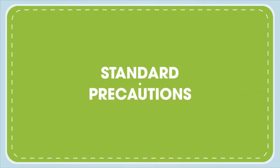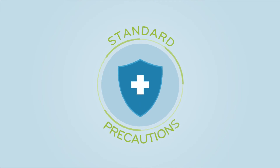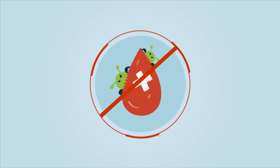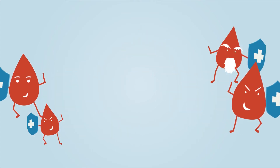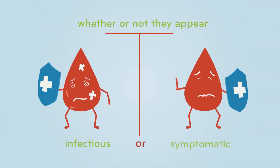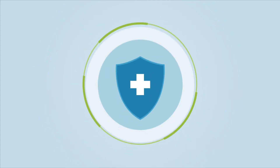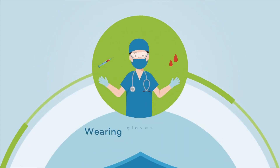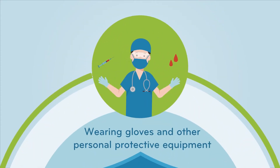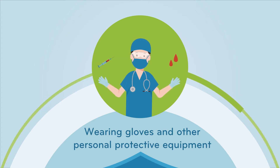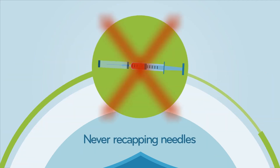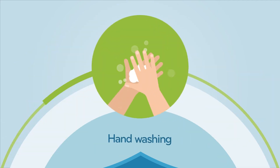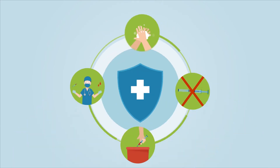Standard Precautions. Standard precautions are used to prevent the spread of blood-borne germs. They are used when providing care to all individuals, whether or not they appear infectious or symptomatic. Standard precautions include wearing gloves and other personal protective equipment when in contact with potentially infectious materials, using sharps disposal units, never recapping needles, and handwashing — the number one way to prevent the spread of infections.